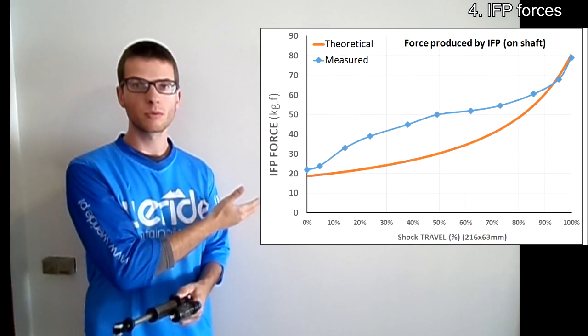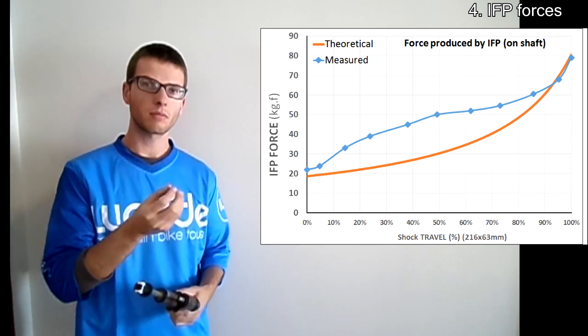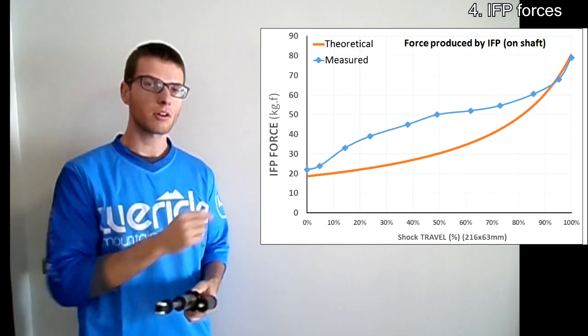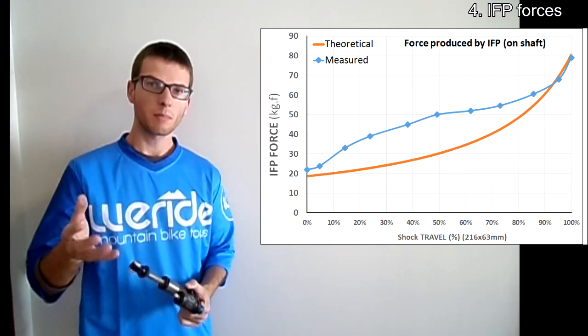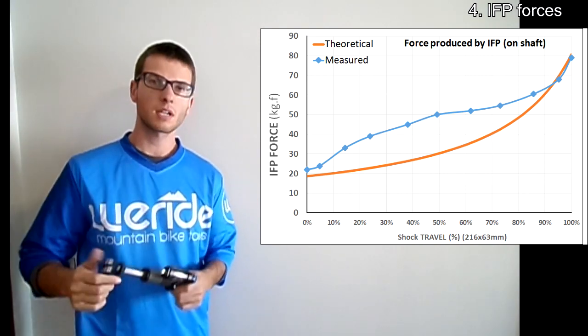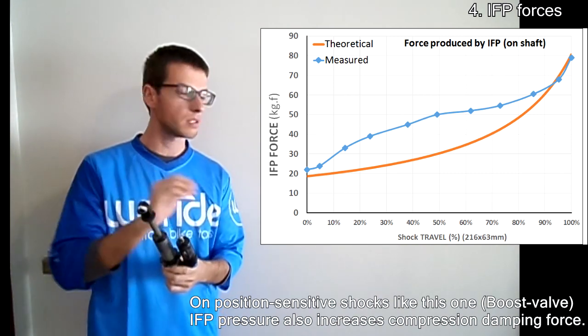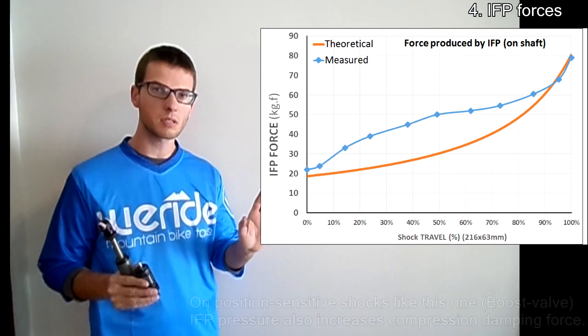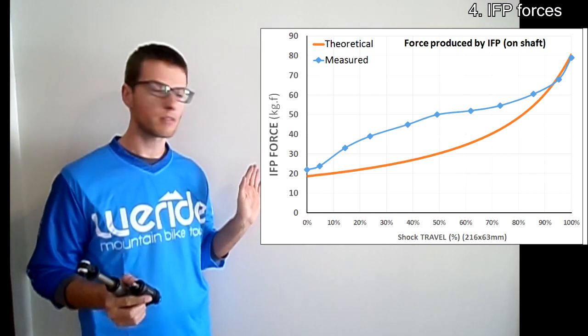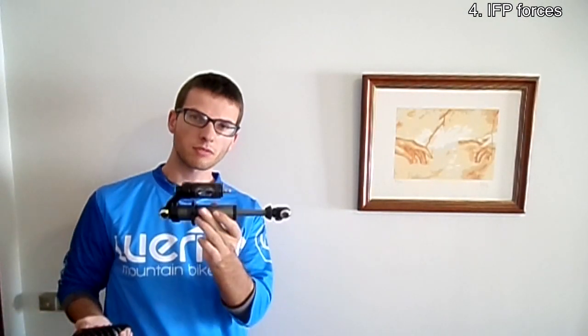I measured the force that the rear wheel needed to compress the shock, normalizing with the unsprung weight and the leverage ratio of my bike at each point. In blue you have the real measured values, and in orange the theoretical values. There is a pretty good match — not perfect, because the weight scale method is not very accurate and there is some influence of compression damping — but the results are similar, with a very good match for the breakaway force and for the total force to bottom out.